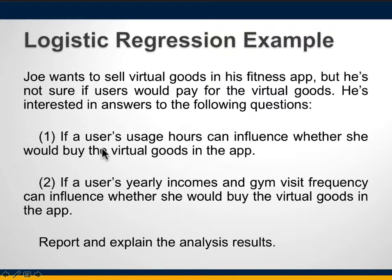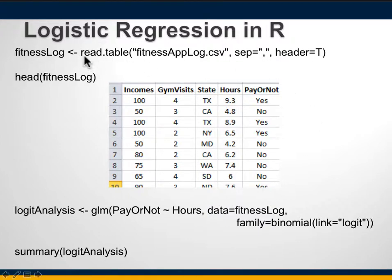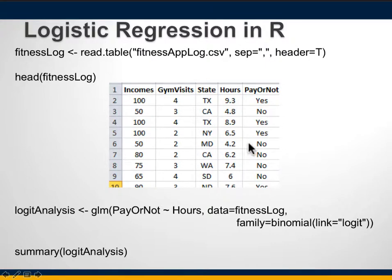Note that the question has only two options: yes or no — whether they will buy or not. The dependent variable is whether they buy, and the independent variable is usage hours. The data from a survey shows respondents' usage hours, gym hours, income, and whether they said yes or no to buying virtual goods.